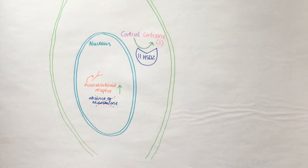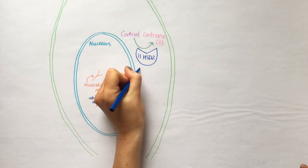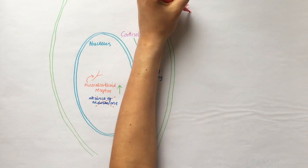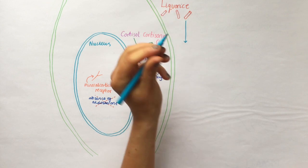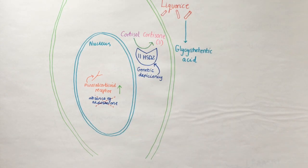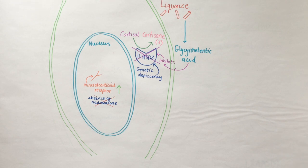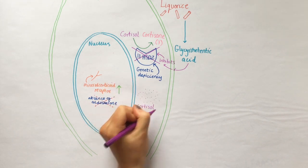The 11-HSD2 inhibition may be caused by many factors, including the genetic deficiency of the protein or, interestingly, by licorice ingestion. Licorice is metabolised to glycynotyric acid, which inhibits the 11-HSD2 enzyme and results in inappropriate stimulation of the mineral corticoid receptor by cortisol.